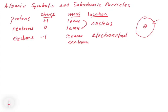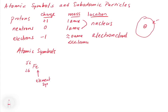The next thing we're going to look at is atomic symbols — again, this is review from your high school course. Let's look at the atomic symbol for iron. We put 56 up top and 26 at the bottom. There are a couple of different things to dissect here. In the middle we have the element symbol. Every element on the periodic table gets a symbol — for example, sodium is Na, lithium is Li, iron is Fe, and oxygen is O.